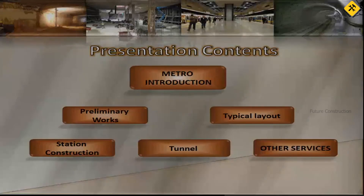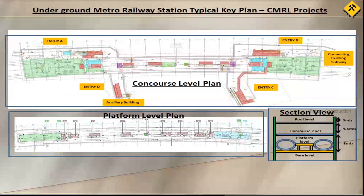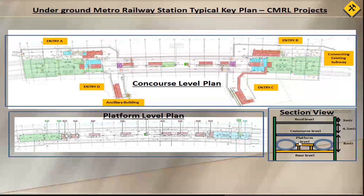A typical layout of a construction underground station. The underground station consists of the station building and the ancillary building. The station building has three levels: the roof level, the concourse level, and the base level. At the base level, there is a platform area where people can board the train.